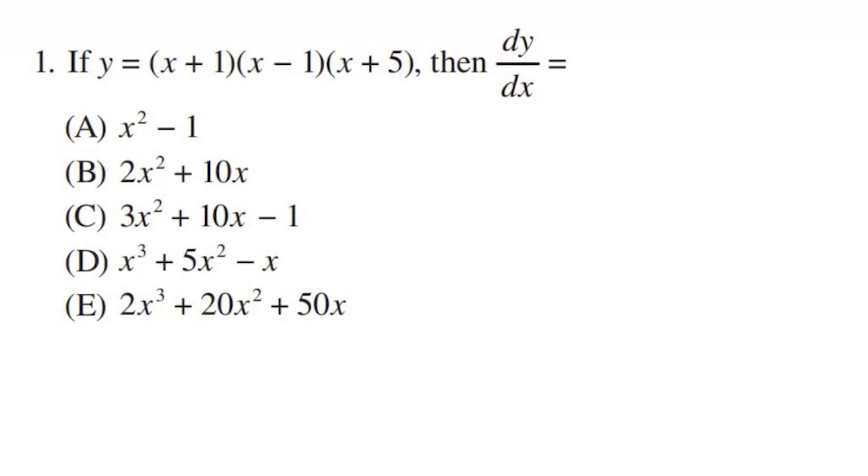Finding this derivative is going to be a lot easier if we take this polynomial that's currently in factored form and multiply out all the factors and get it into standard form. When I do that, I will be able to use the power rule on each term individually and find this derivative pretty simply. So let's start by multiplying out all three of the factors here.